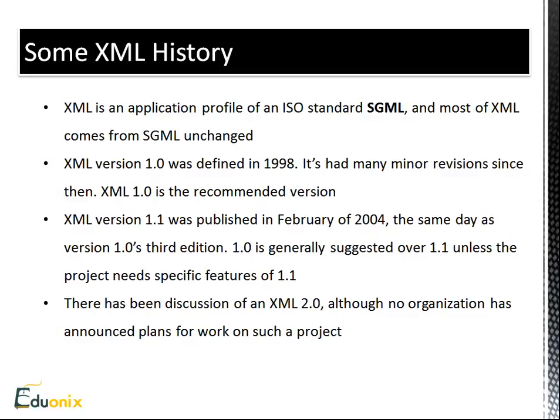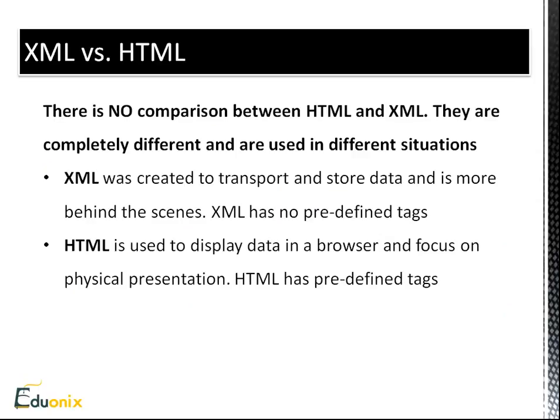There has been discussion of an XML 2.0, although no organization has announced plans for work on it. XML versus HTML — there's no real comparison because they are completely different and do completely different things. XML is a data interchange format used to structure, store, and transport data. It doesn't display anything. HTML was created to display data in a browser and focuses on the physical aspects of a web page. HTML has predefined tags like paragraph, headings, and image tags, while in XML you create your own tags.